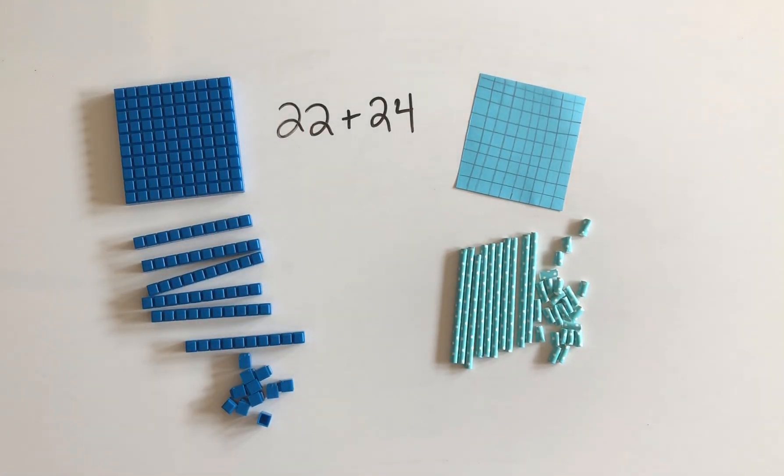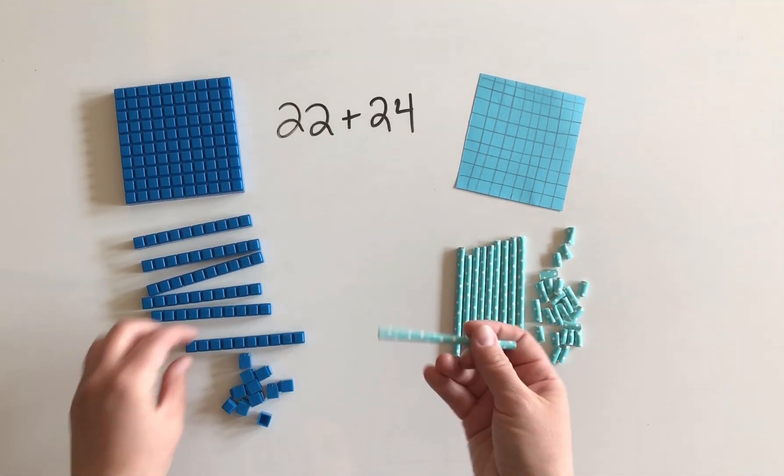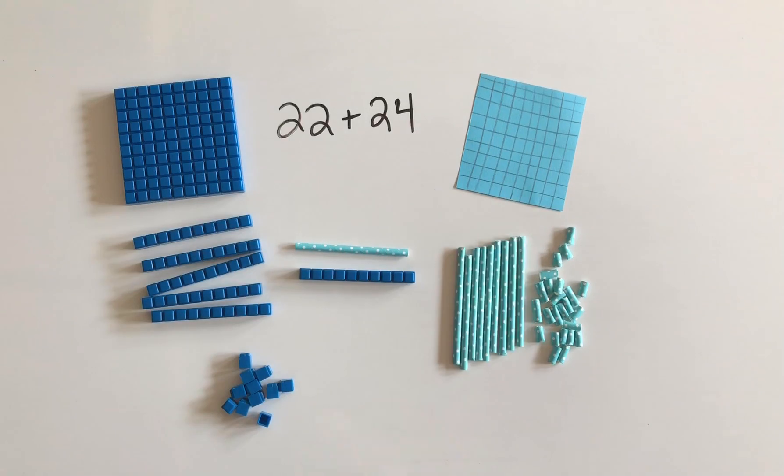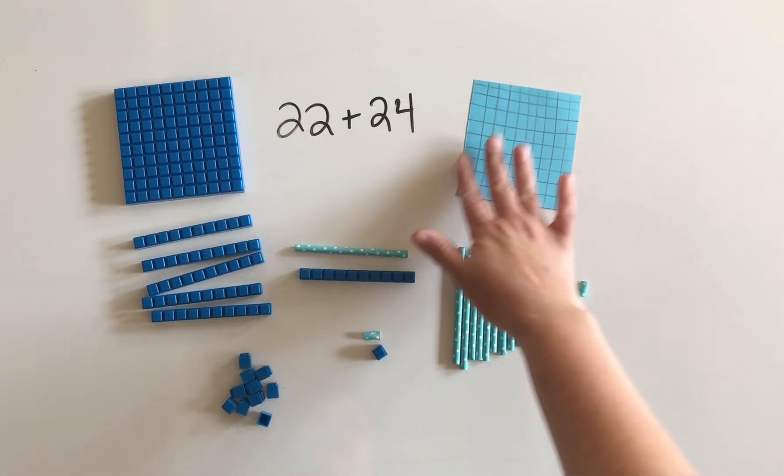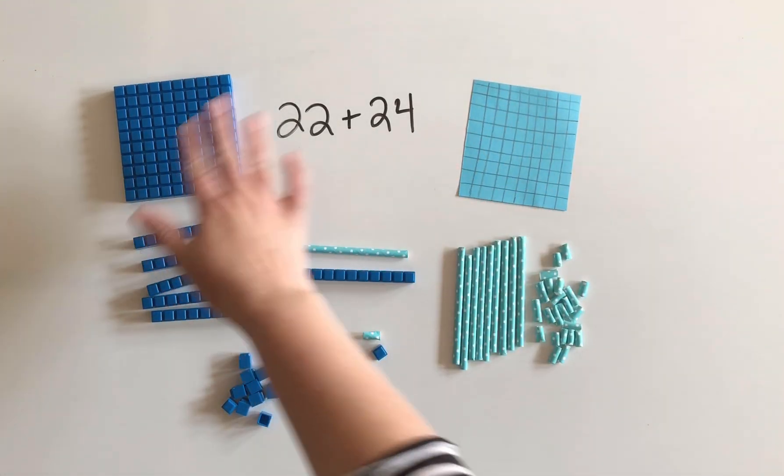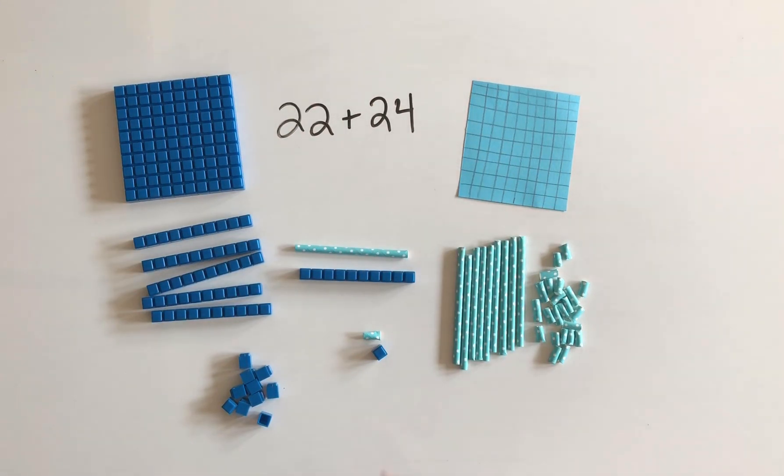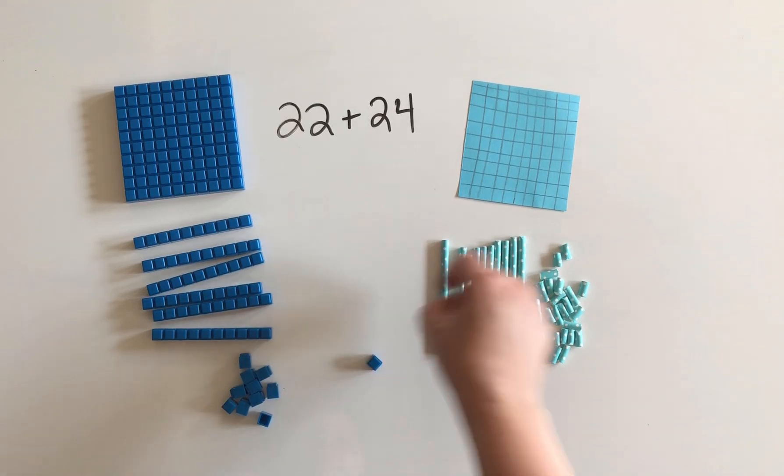So you probably don't have a set of base 10 blocks kicking around your house, I understand that. So I made up a DIY option for you and you should be able to make this with things that are already around your house. I used some paper drinking straws and what I did was I cut them into longer pieces to represent 10 and then I just cut them into little pieces to represent 1. And I just took a piece of cardstock paper and drew some lines on there to make a 100 block. So this is something that you can do with household items in order to make your very own set of base 10 blocks.